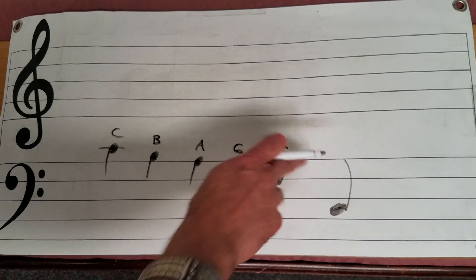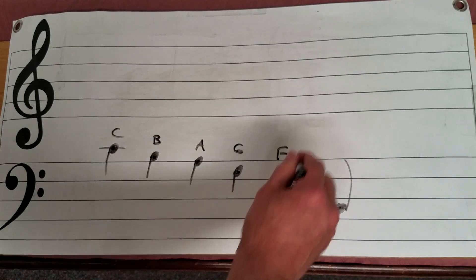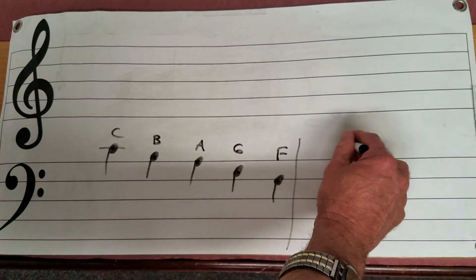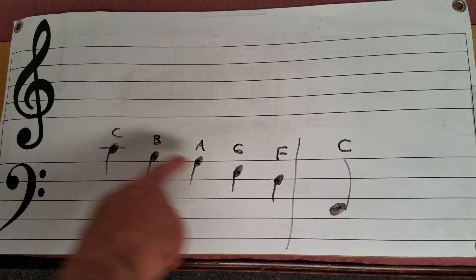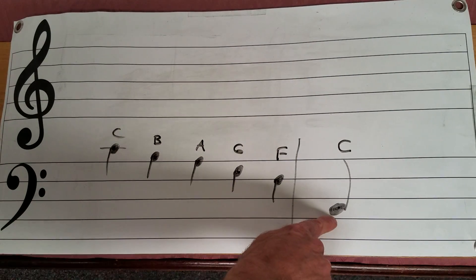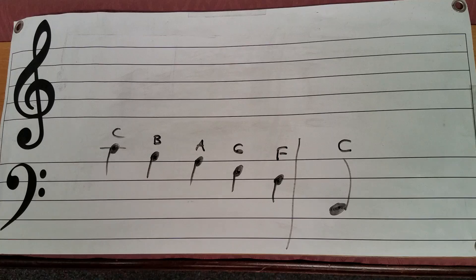It's actually in the second space. You'll see one, two, three, four spaces. This is in the second space. This is what we call the lower C and it just like the higher C in the right hand is an eighth or an octave below middle C. So there it is. There is our lower C.